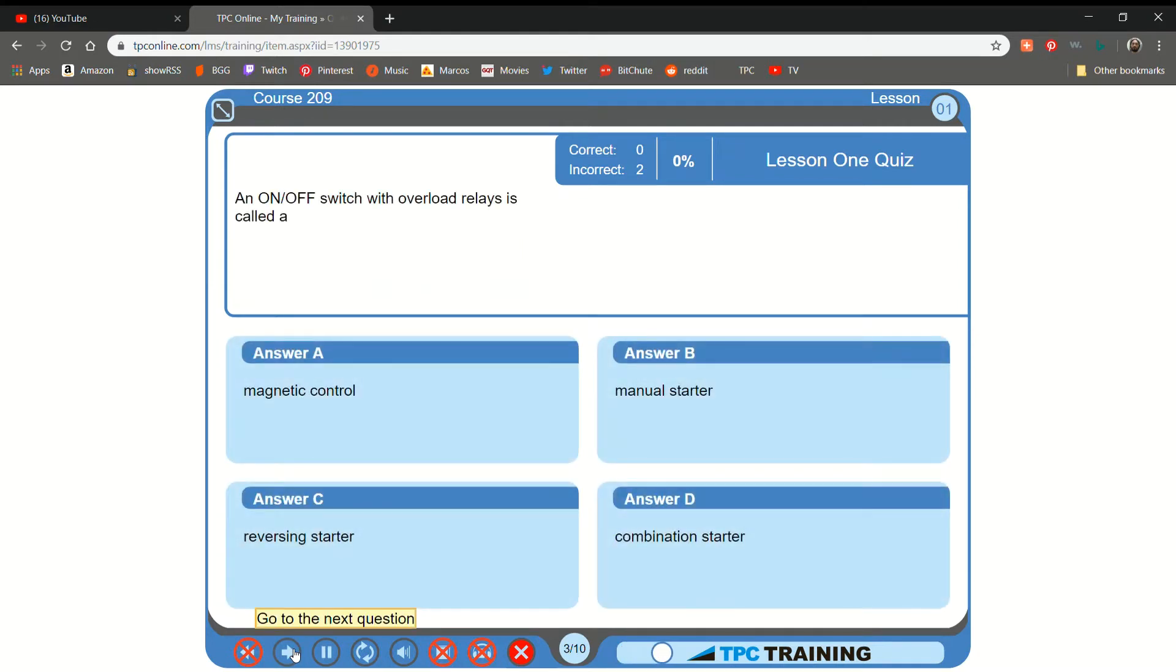An on-off switch with overload relays is called a... A. Magnetic control... B. That is not correct.